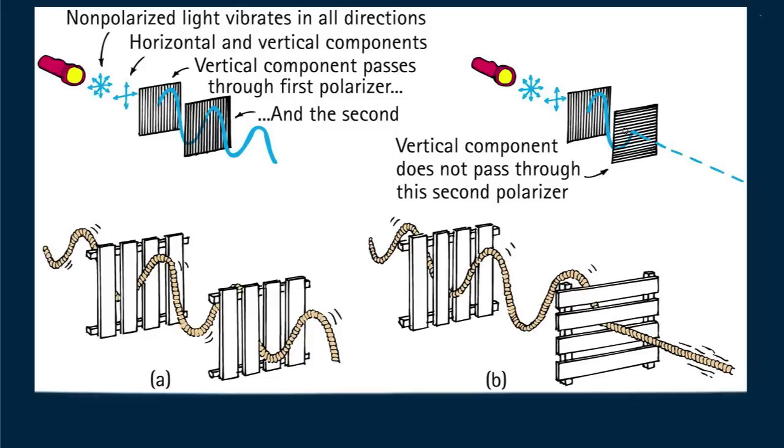But note that when the pair of polaroids are crossed, that is, with the polarization axes at right angles to each other, the light is blocked. Likewise for the vibrating rope through the fences when their axes are crossed.